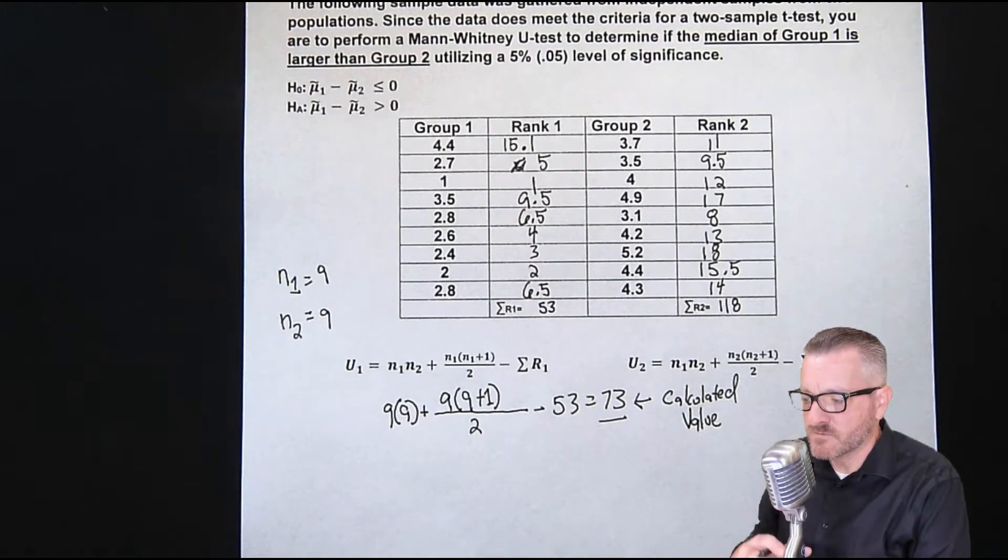So now what we want to do is we need to figure out our critical value. So we have our calculated value, critical value. So this is where, well, this and the way that we determine whether we reject or not, it's a little different.